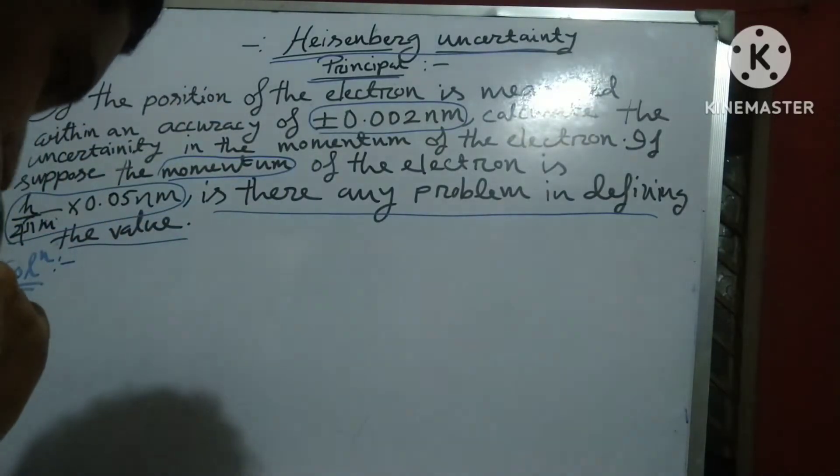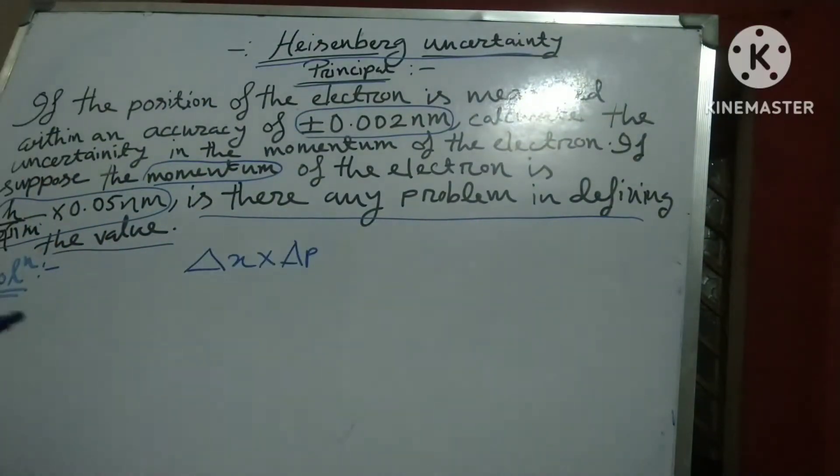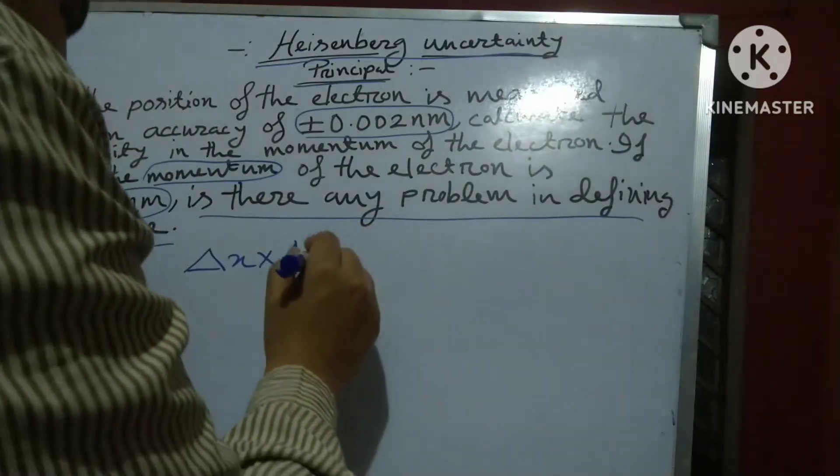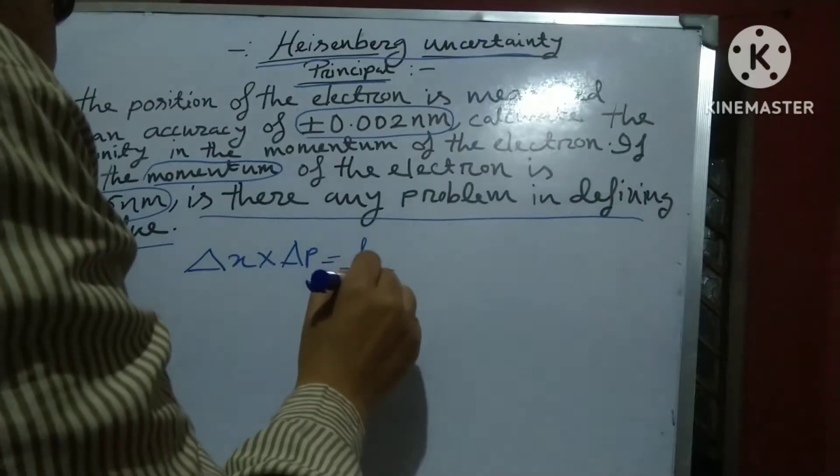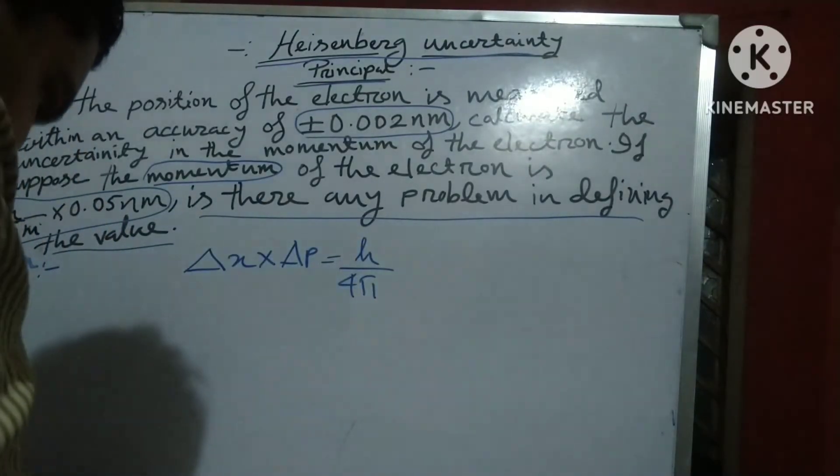So friends, here I use Δx × Δp is equal to h divided by 4π. This is the Heisenberg Uncertainty Principle.